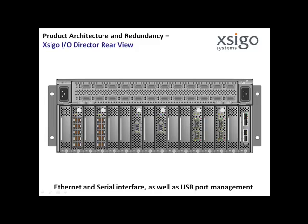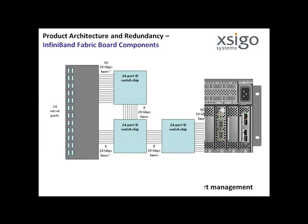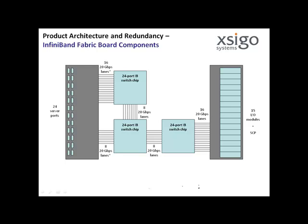The management interface board is always present and provides Ethernet and serial management interfaces, as well as a USB port. The main components of the InfiniBand fabric board are three 24-port InfiniBand switch chips that provide a switched fabric between the 24 server ports and the 15 I.O. module ports. This architecture supports the basic design goal of consolidating virtual I.O. from many servers onto fewer physical I.O. ports on the I.O. modules.